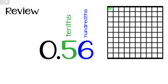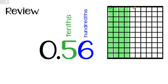If we use a model to draw this, we start by drawing the tenths. A tenth is 10 hundredths, or one whole column in the hundredths grid. So I'll draw 5 tenths: one tenth, two tenths, three tenths, four tenths, five tenths. Then we draw our hundredths — hundredths are just little squares. One hundredth, two, three, four, five, six hundredths. Now our model shows 56 hundredths, or zero and 56 hundredths.